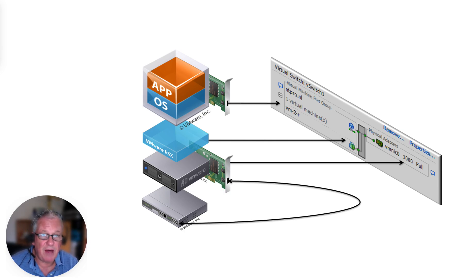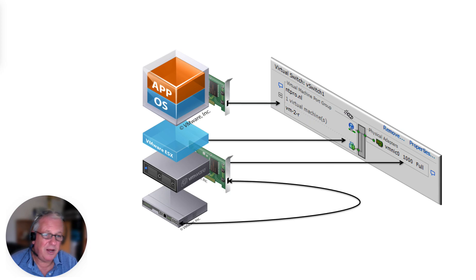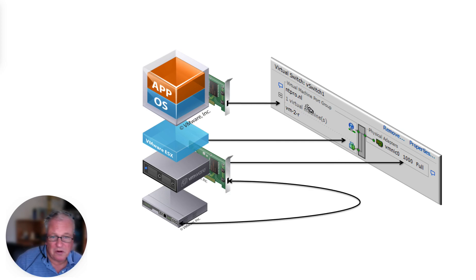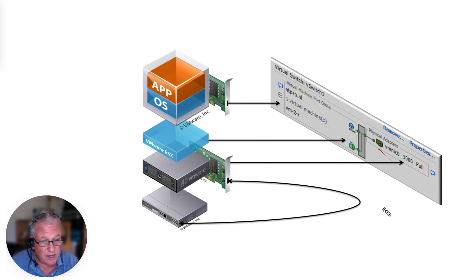So what do we have? We're using a virtual machine configured with a virtual network adapter. The network adapter is attached to a port group, and the port group can be used to configure policies, security policies, bandwidth toggling, VLAN IDs. The port group is configured on a virtual switch and the virtual switch is attached to a physical network adapter.